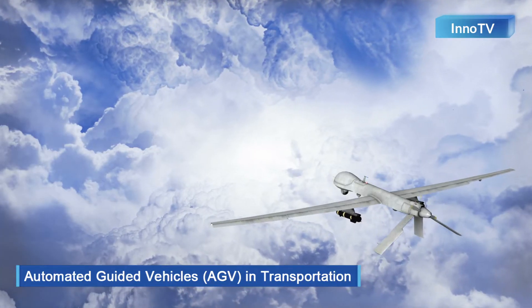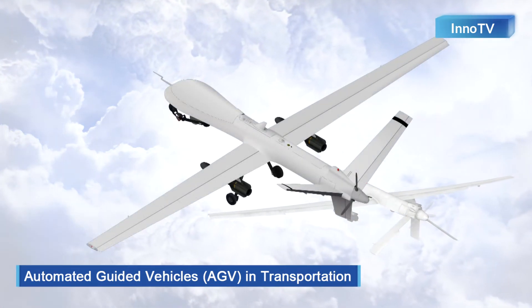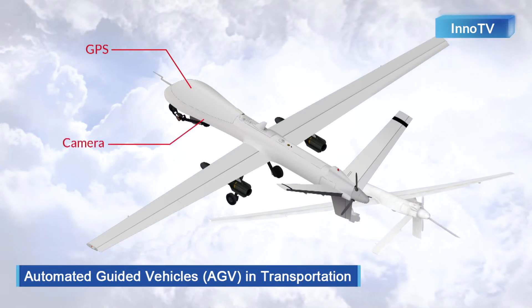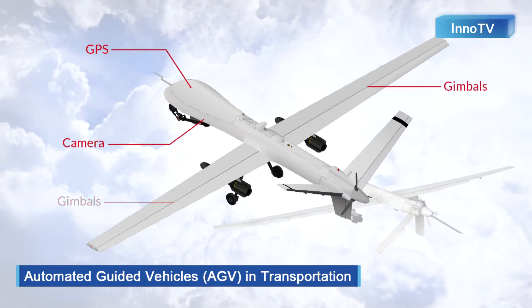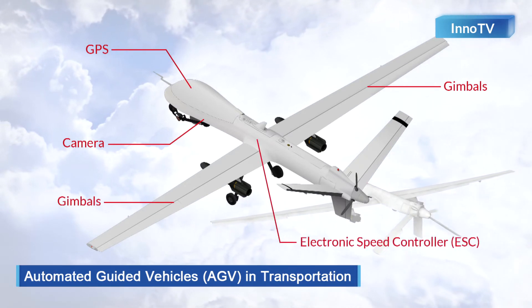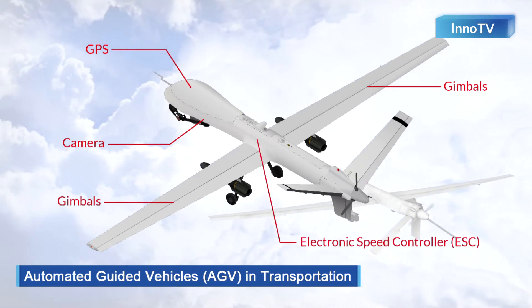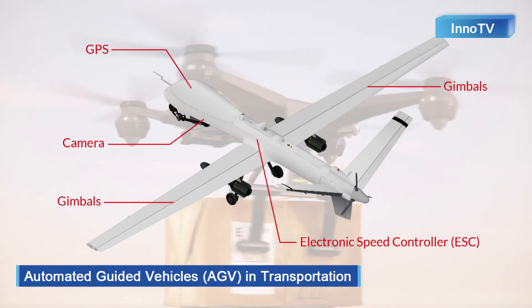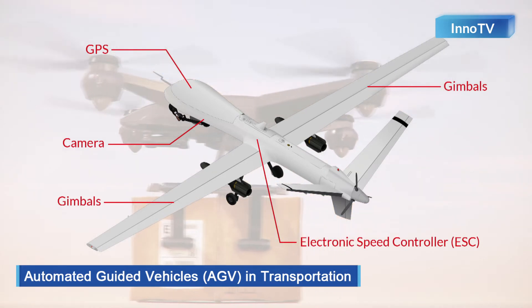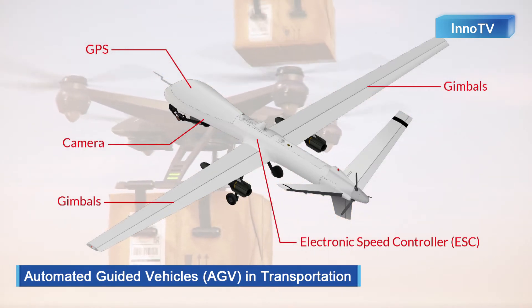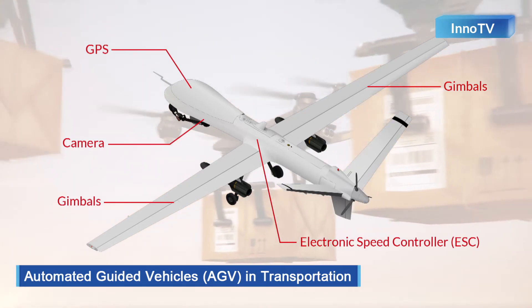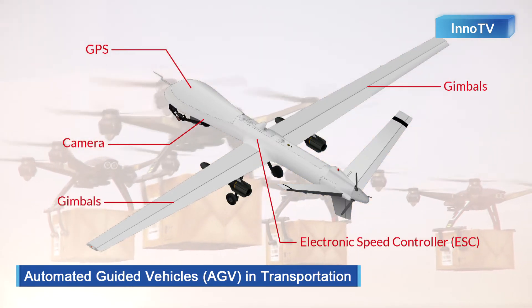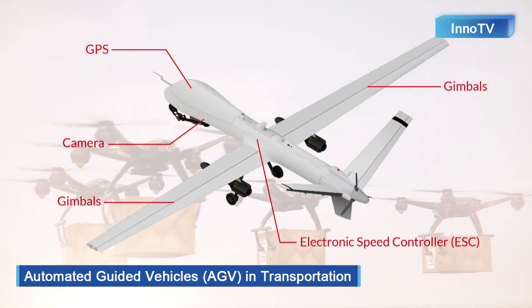In the transportation area, unmanned transportation vehicles are no longer just an imagination of the future, but have begun to be put into commercial operations, such as unmanned helicopters or drones used to carry materials or spray water to put out fires. CAN bus is an essential communication interface for connecting cameras and essential units like GPS, ESC (the electronic speed controller), due to its high speed, high reliability, high flexibility, and low cost features.